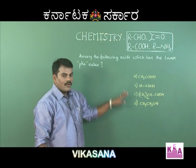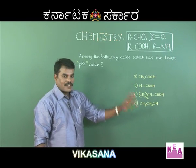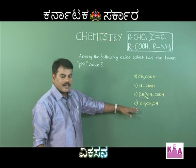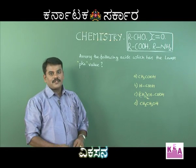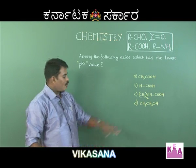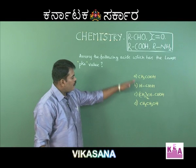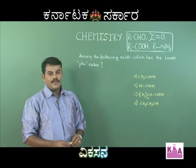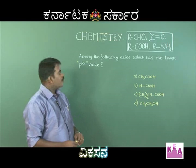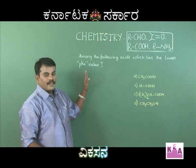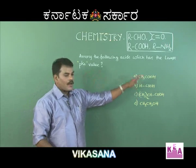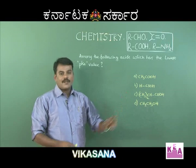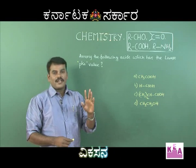This is an option elimination approach. Alcohols are less acidic compared to carboxylic acids, so option D can be eliminated. Among the remaining carboxylic acids, among all aliphatic carboxylic acids, formic acid is the strongest.